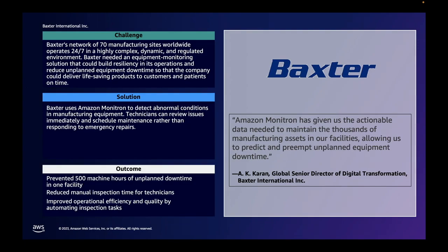Global medical technology company Baxter International prevented over 500 machine hours of unplanned downtime using 2,500 Amazon Monitron sensors in its largest facility in the United States. Baxter's mission is to save and sustain patient lives by delivering products to treat chronic and acute medical conditions. To reduce unplanned equipment downtime in its facilities, which run around the clock, Baxter needed an equipment monitoring solution that was simple to deploy, equipment agnostic, cost efficient, and scalable. The company's shift from a reactive to a predictive maintenance strategy resulted in improved business processes using Amazon Monitron.